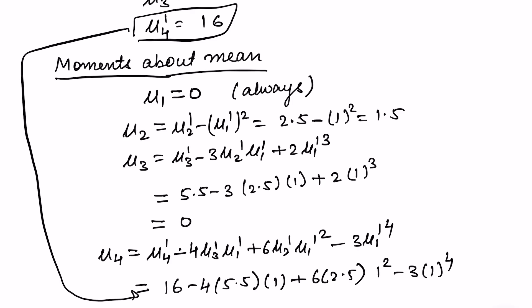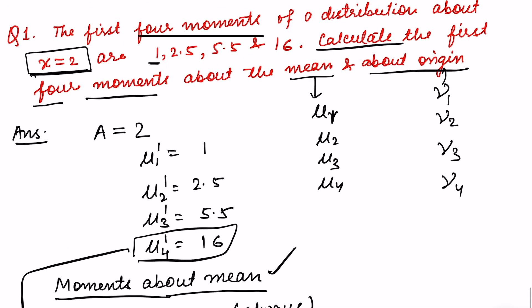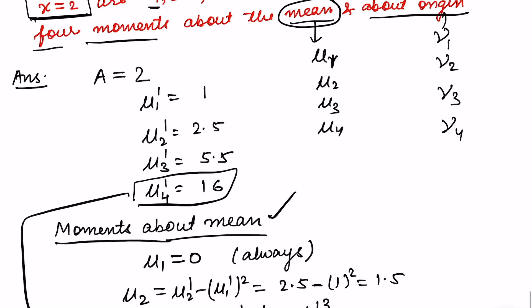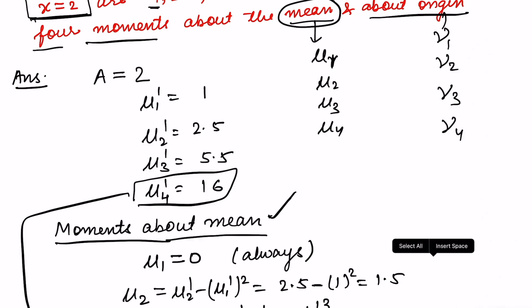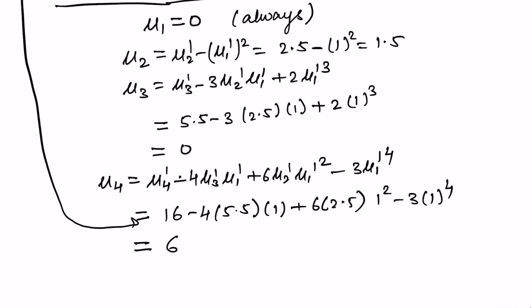So this is the moment about the mean, which was asked in the first part of the question. Now moving on to the second part of the question, where we are required to find the moments about the origin.